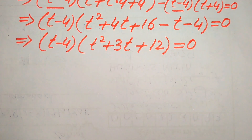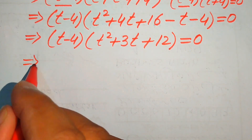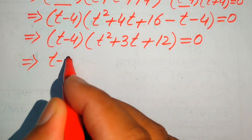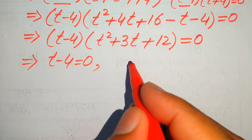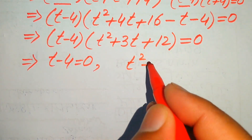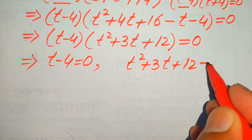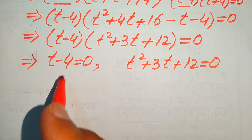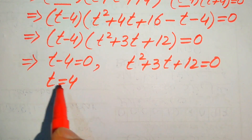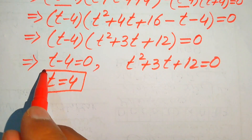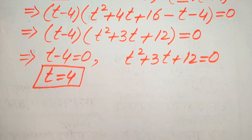We now split into two cases. The first case: t minus 4 equals 0, giving t equals 4. The second case: t squared plus 3t plus 12 equals 0. From the first case we easily get t equals 4, which is our first real root of the given equation.